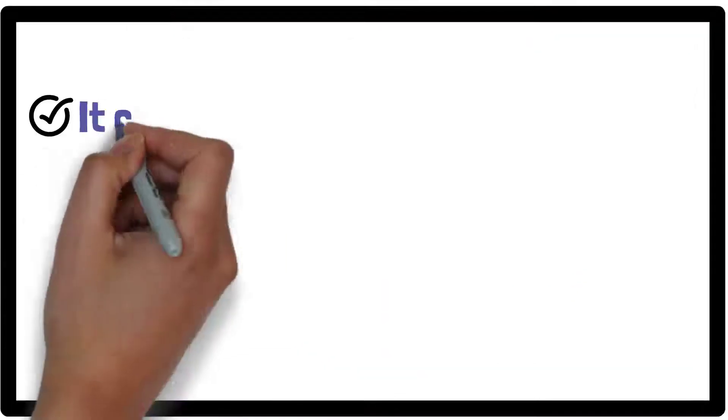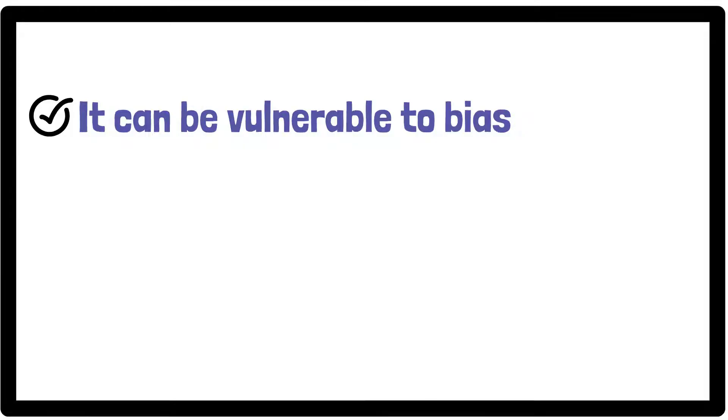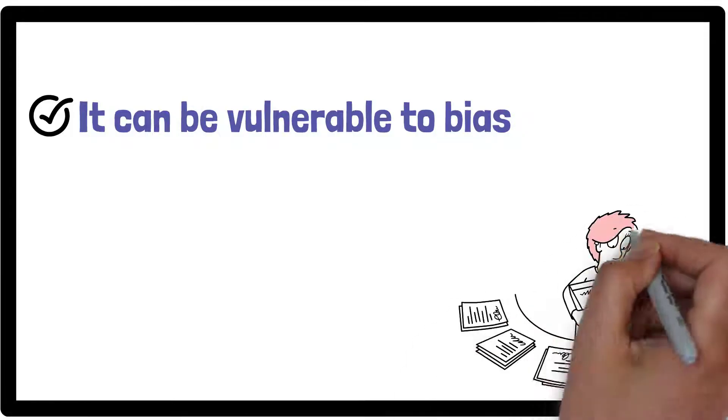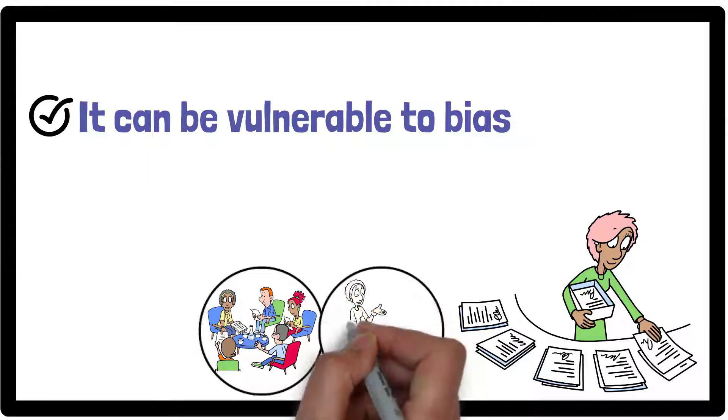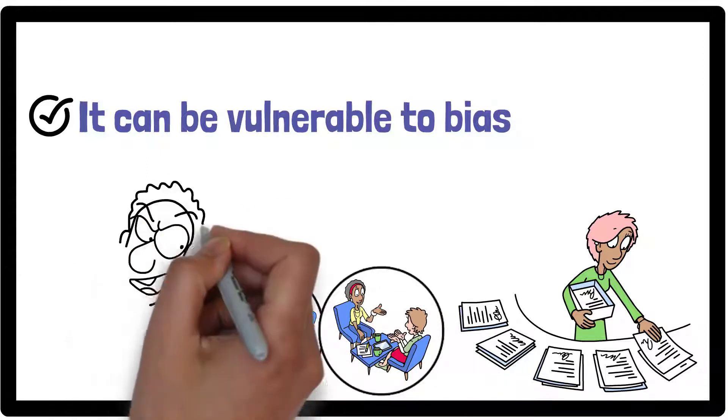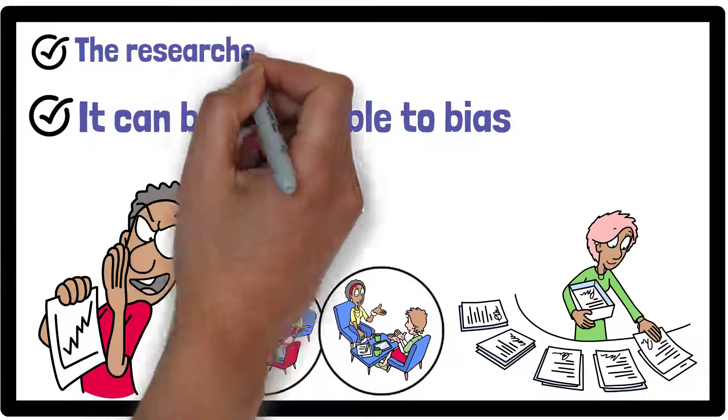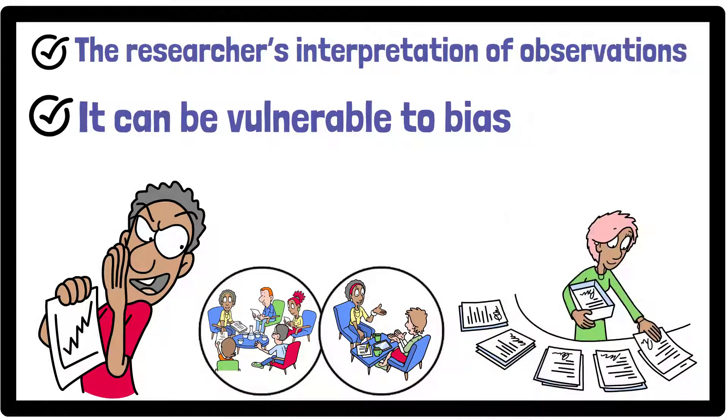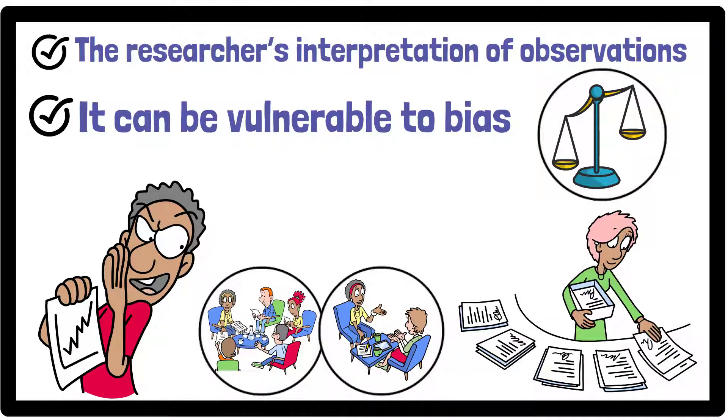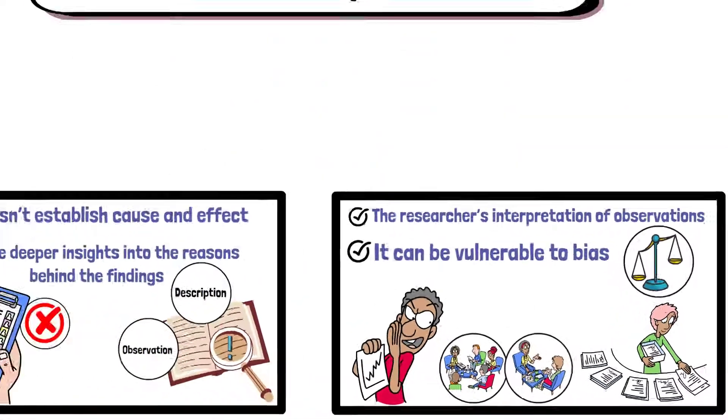Another criticism is that it can be vulnerable to bias. Since descriptive research relies heavily on self-reported data such as surveys or questionnaires, participants may provide inaccurate or biased responses. Additionally, the researcher's interpretation of observations can sometimes introduce bias into the study, affecting the reliability of the results.